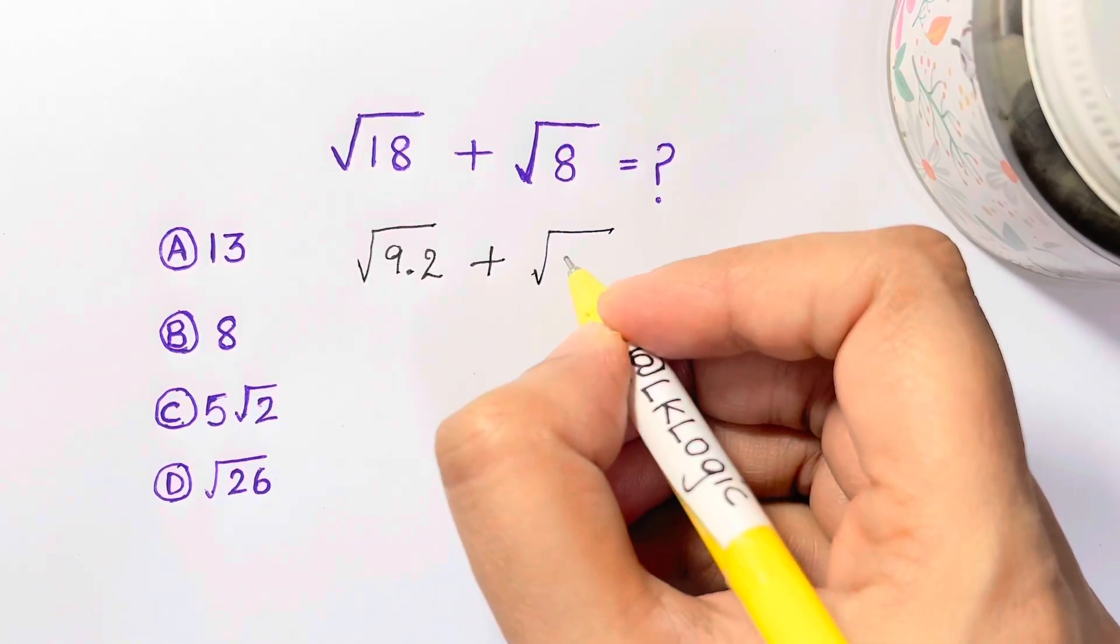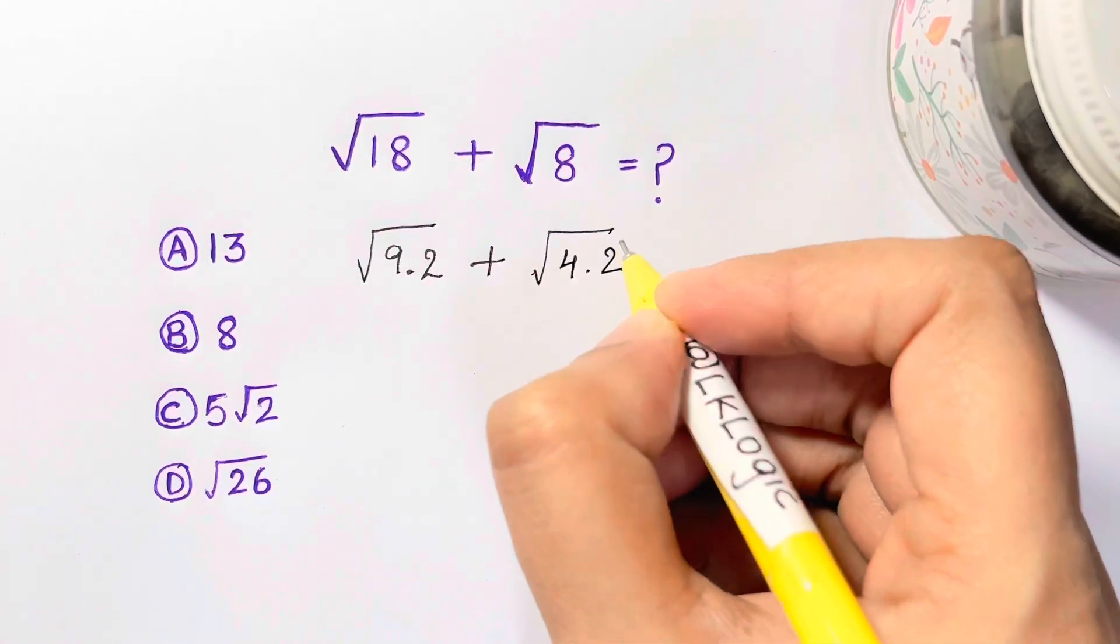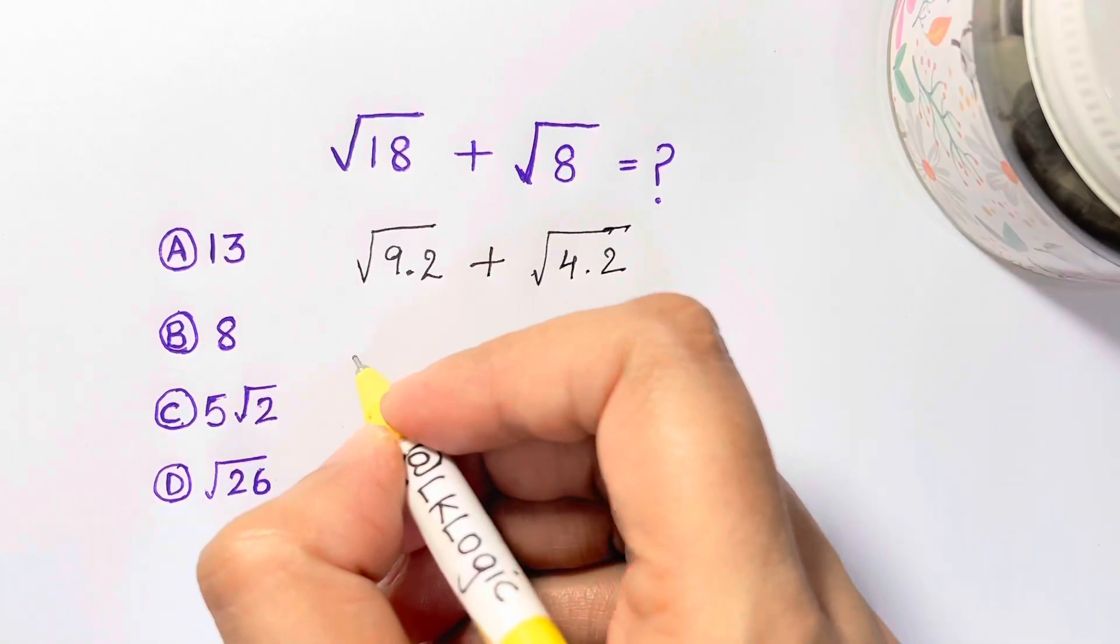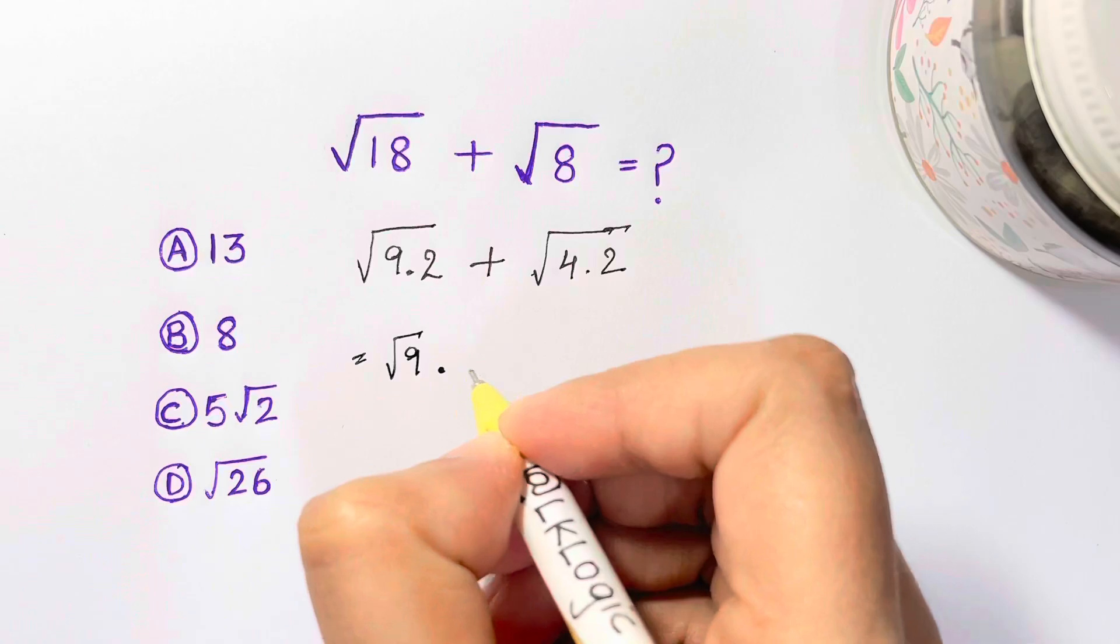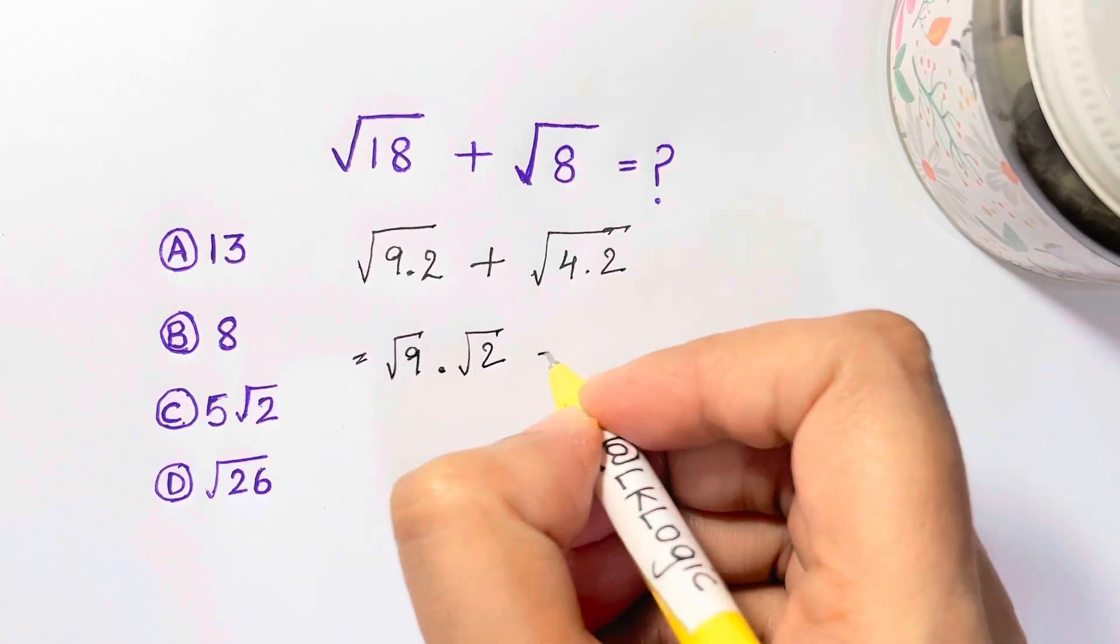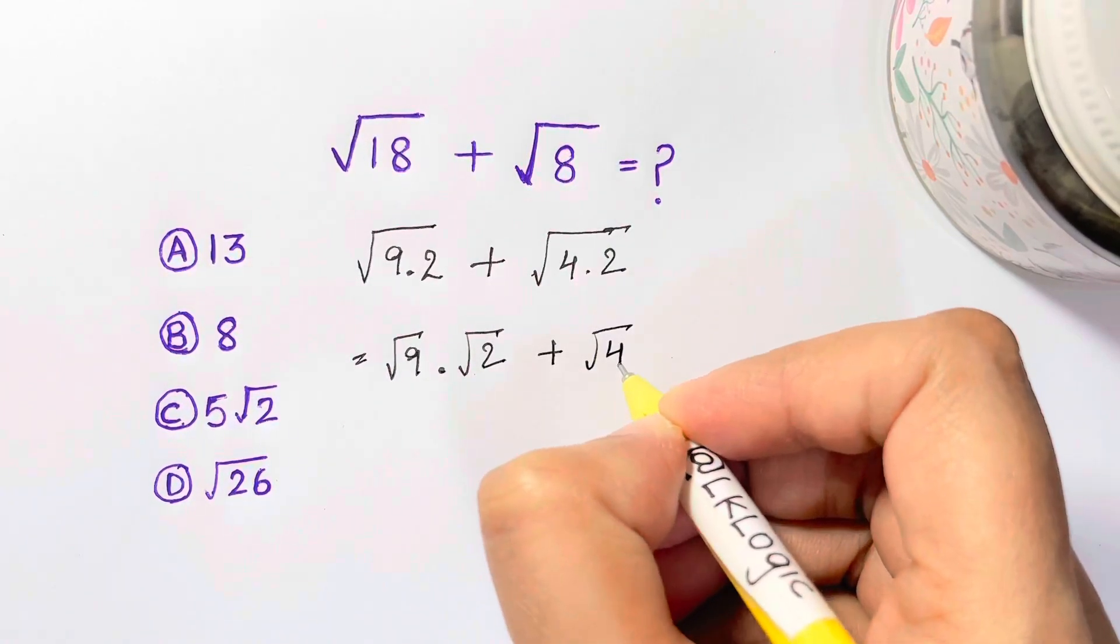Now I think you've got it what we're gonna do. Square root of 9, just split them up, square root of 2 plus square root of 4 times square root of 2.